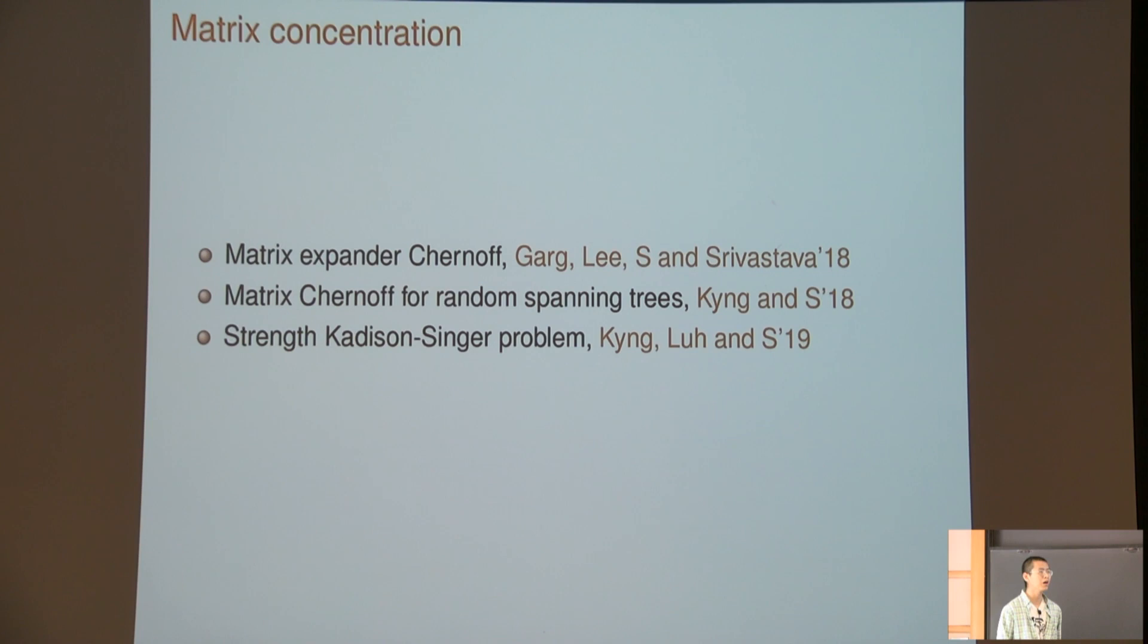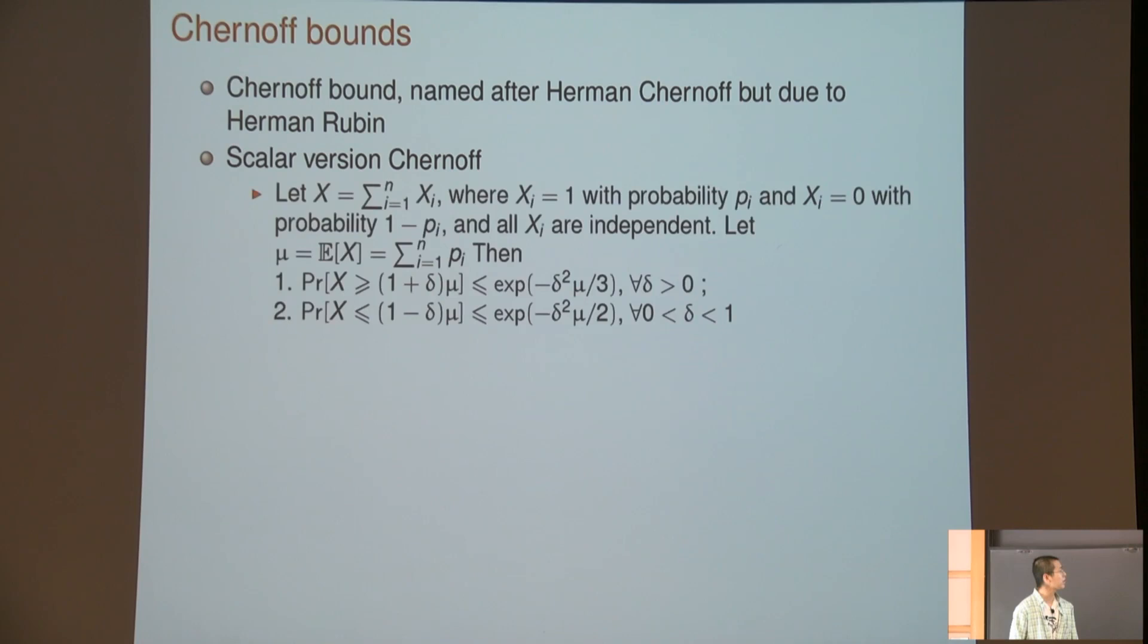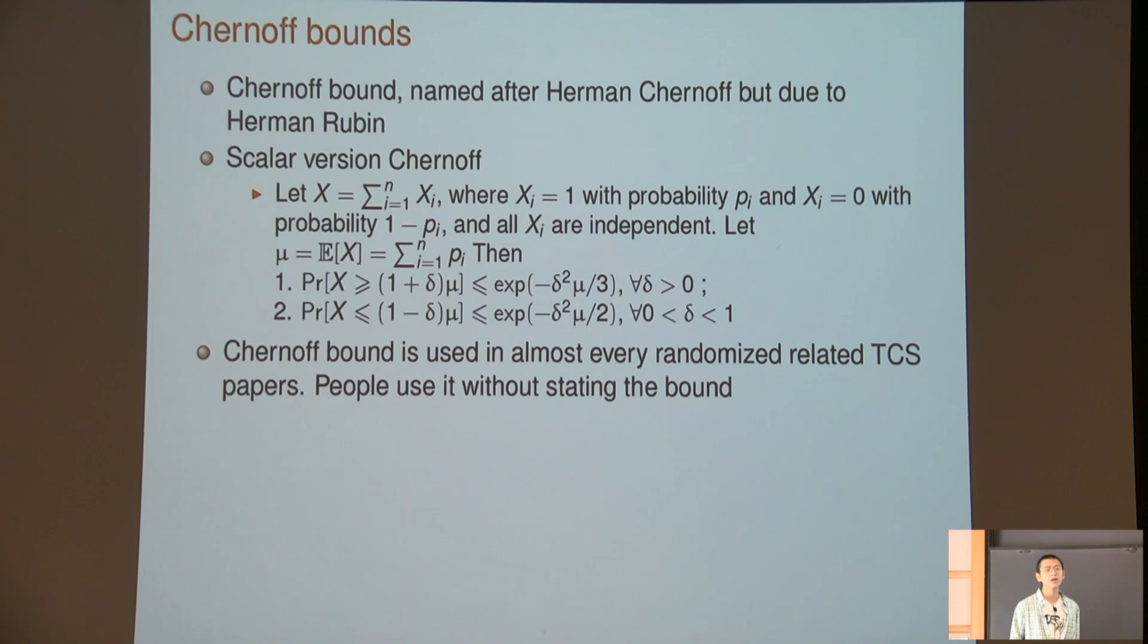Next, I'm going to talk about concentration, where you want to add a bunch of matrices and show the concentration. This is joint work with Ankit Garg, Yin Tat, and Nikhil Srivastava, and Rasmus Kyng and Yilu. I'll start with the scalar version of Chernoff bound. Chernoff bound is actually named by someone but not proved by the same person—it's very funny, but we use the same name. The scalar version is very classical. You have a bunch of random variables between 0 and 1, and you want to say the summation of those random variables is concentrated around their expectation.